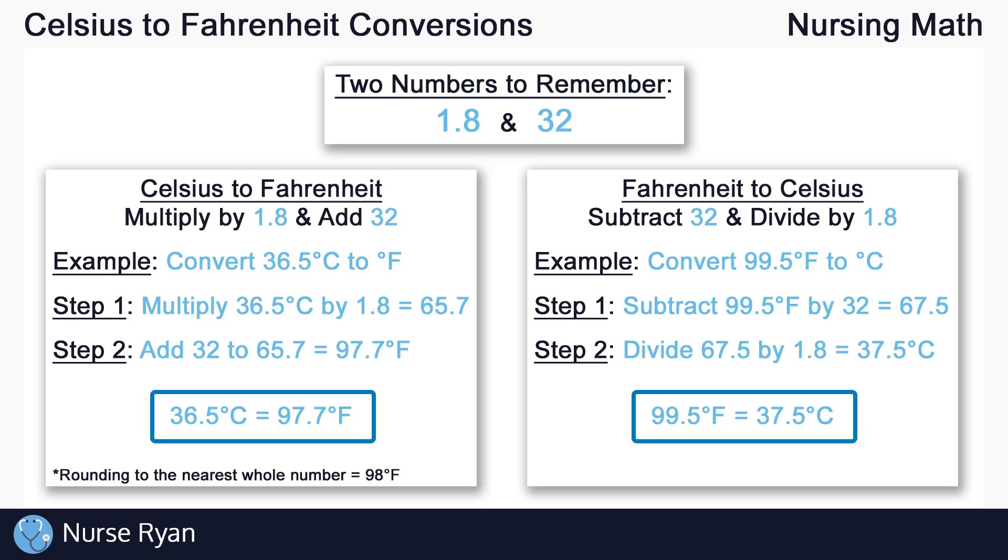In general, we round degrees Celsius to the nearest tenth, so we're good to keep it at 37.5. But if you want to round to the nearest whole number, that would be 38 degrees Celsius.